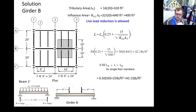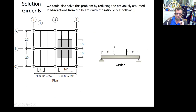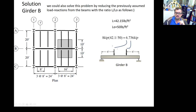Originally the reactions were calculated as 8 kip based on 50 psf. Since we're in the linear elastic range, we multiply those 8-kip forces by the ratio of the new load to the old load (42.1/50) to get the reduced reactions for girder B. Also, the self-weight of girder B should be applied as a uniformly distributed load.